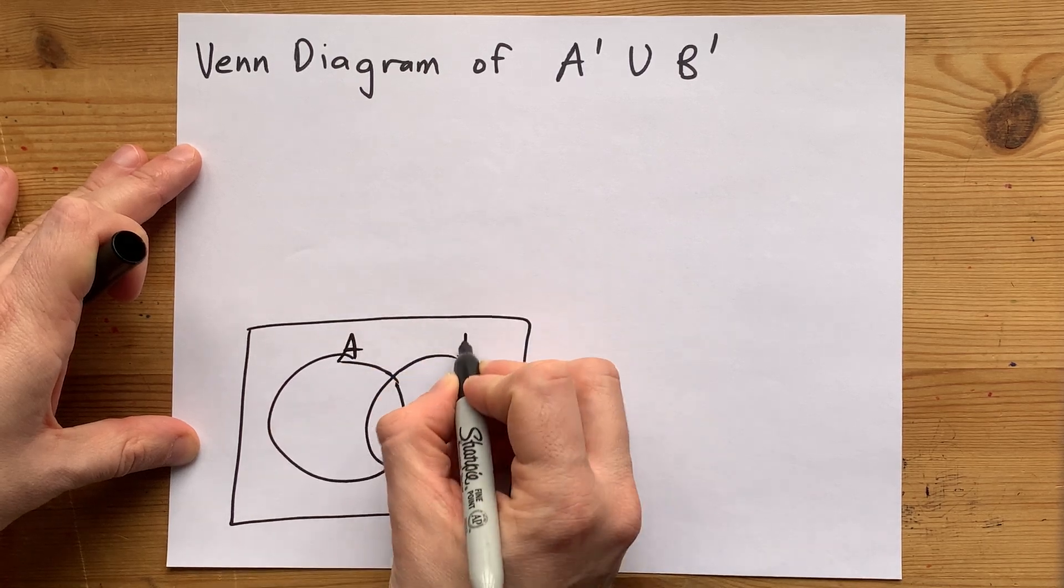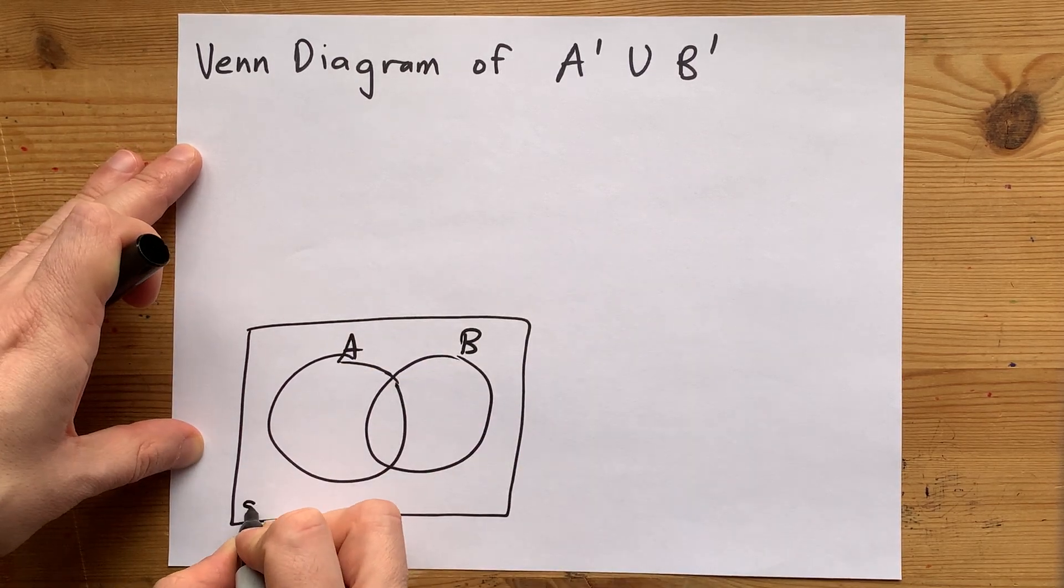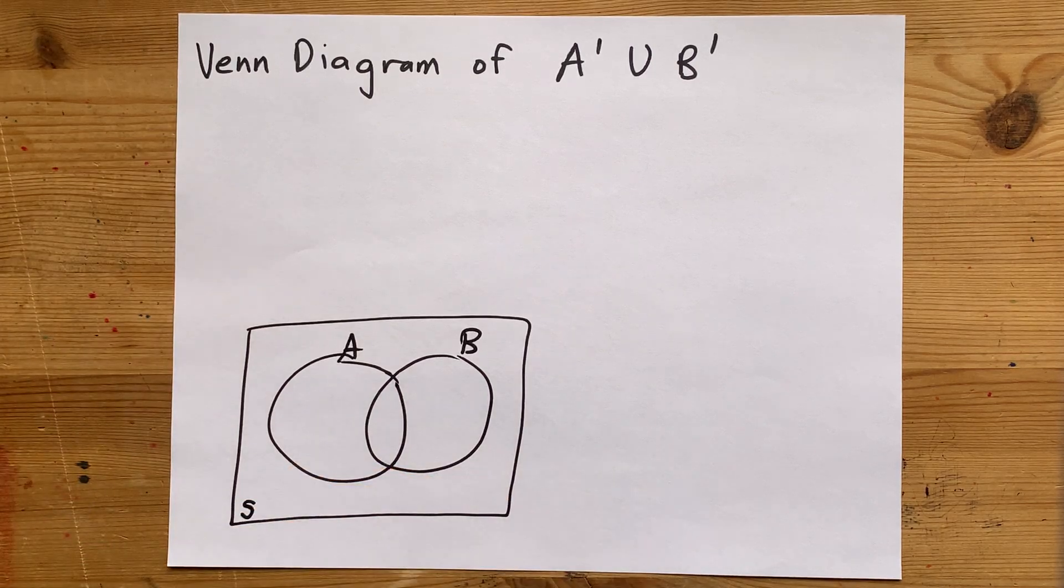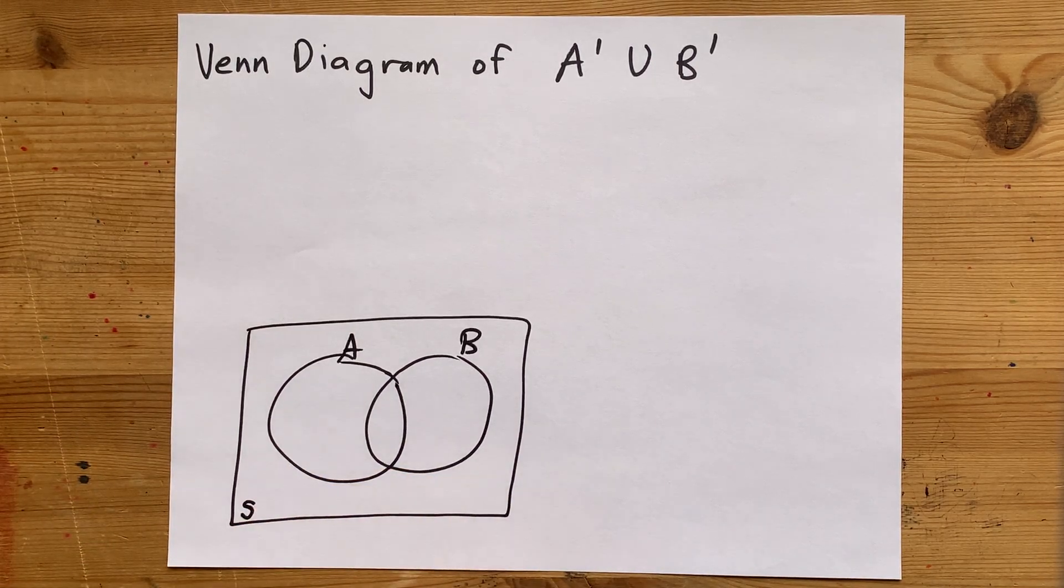There's one circle for A, there's one circle for B. I'm going to label the outside as S. Some teachers use U for universe, but I use S for sample space.